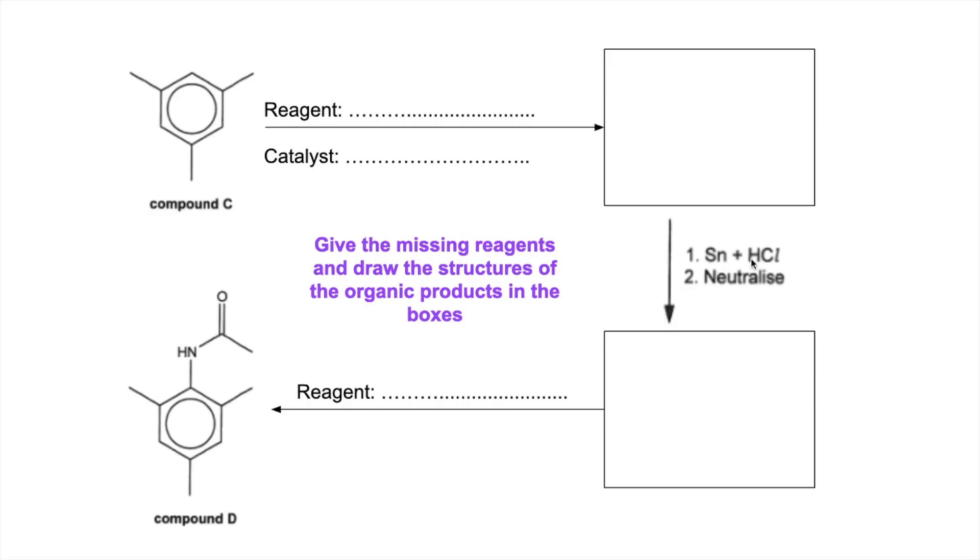Now, there's a bit of a clue in this step here, so we've got a mixture of tin and hydrochloric acid. The HCl is then neutralized, so this is a reducing agent. So we're going to reduce the nitro group that's going to go on here into an amino group that's going to be on there, and then we're going to convert that to that amide group.